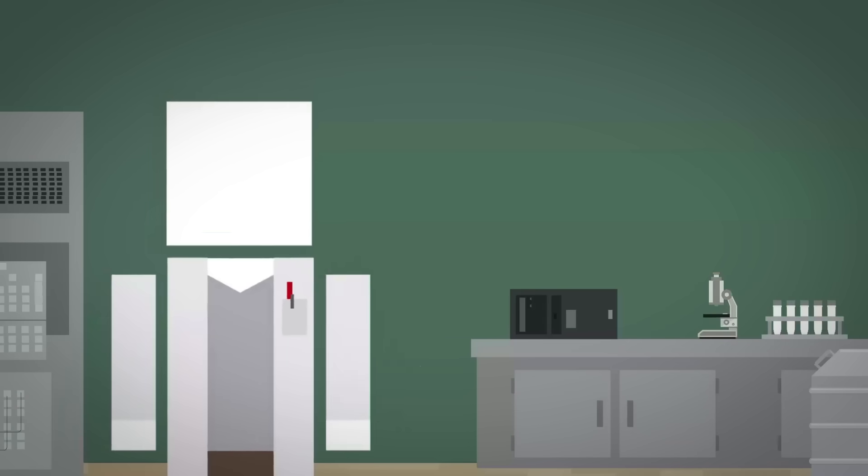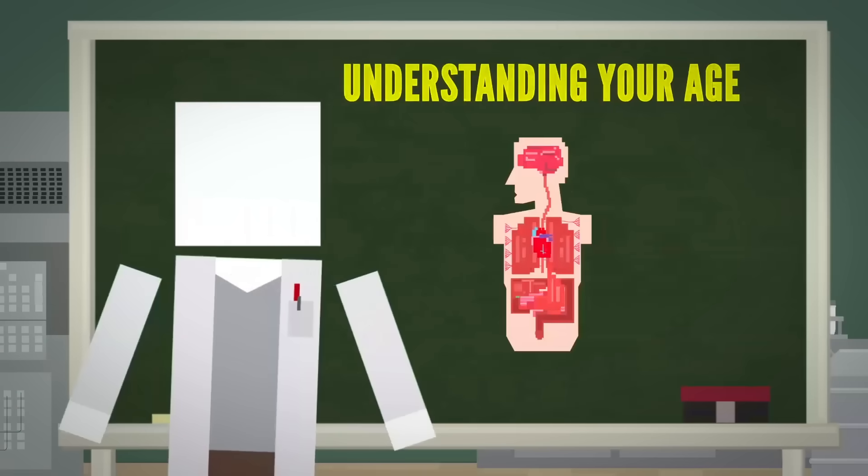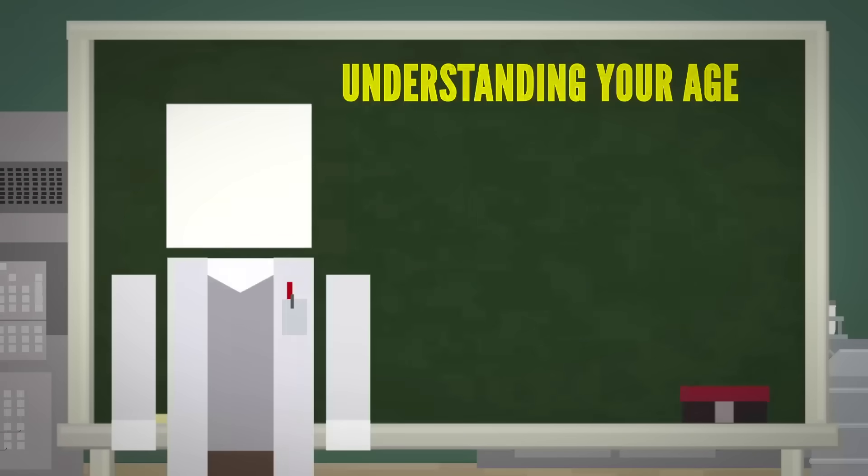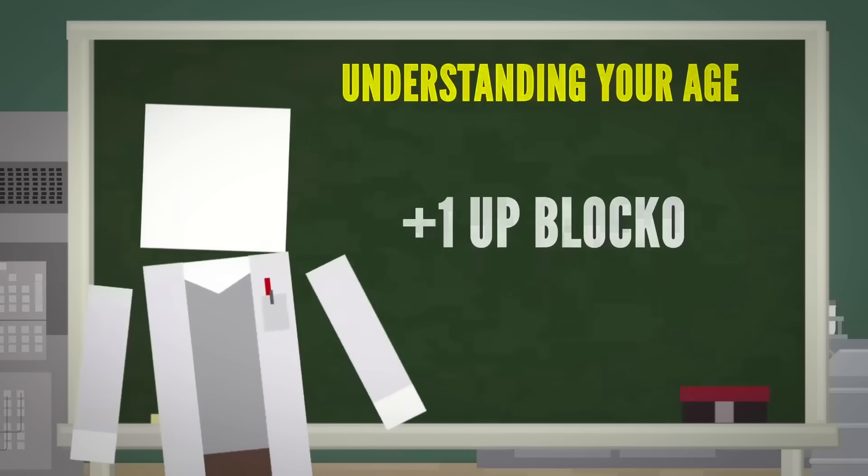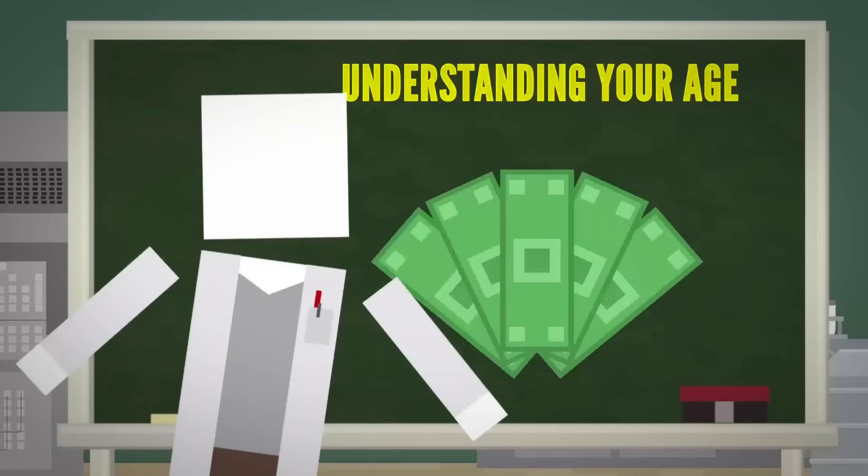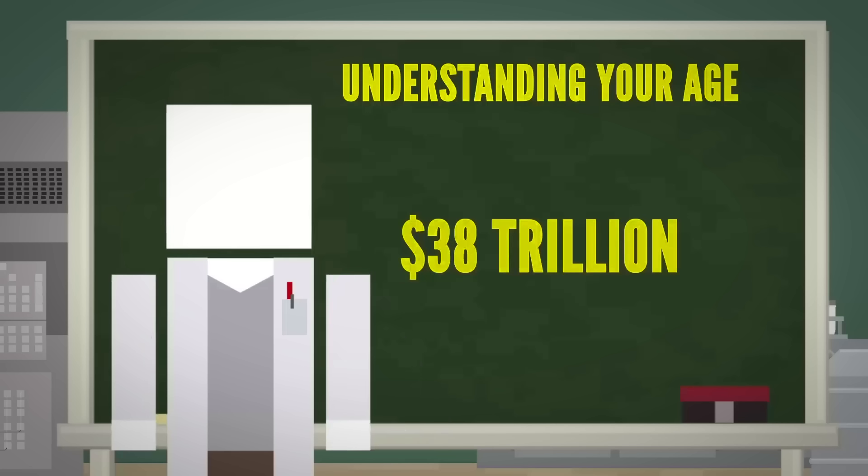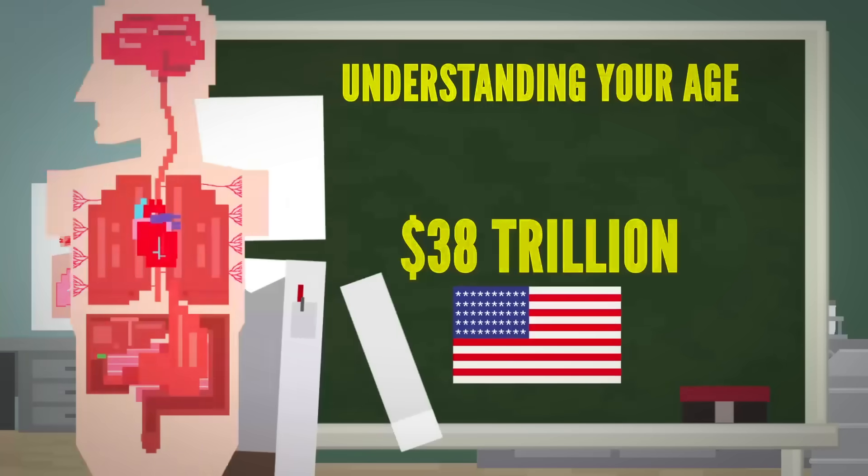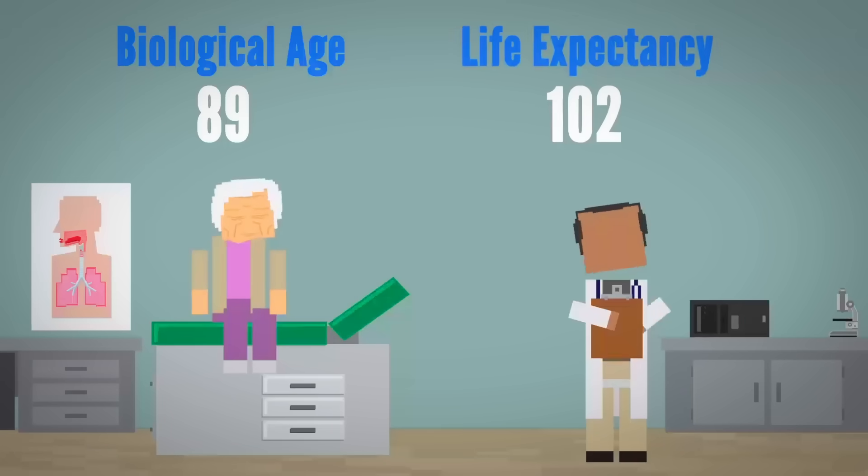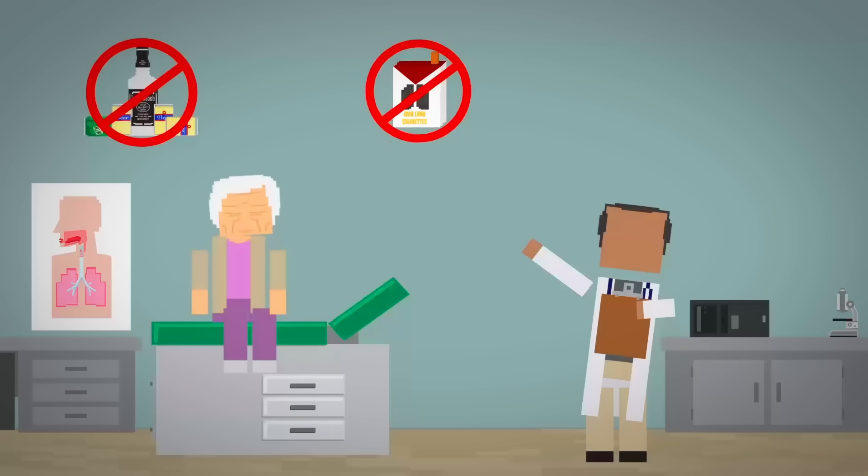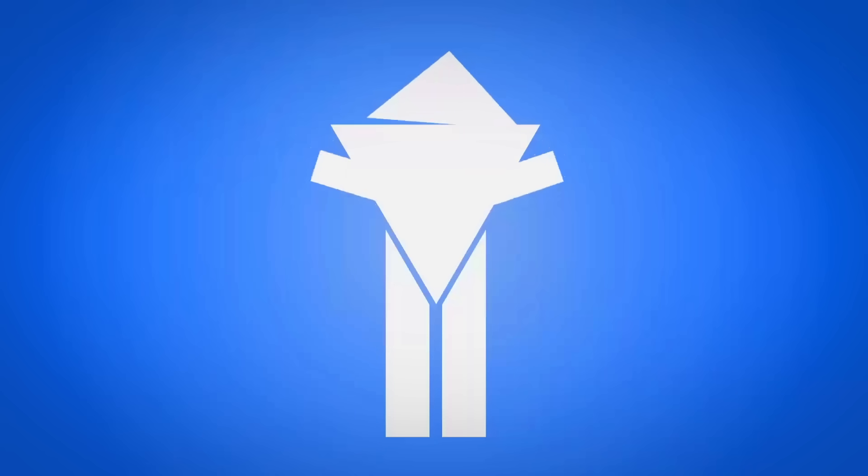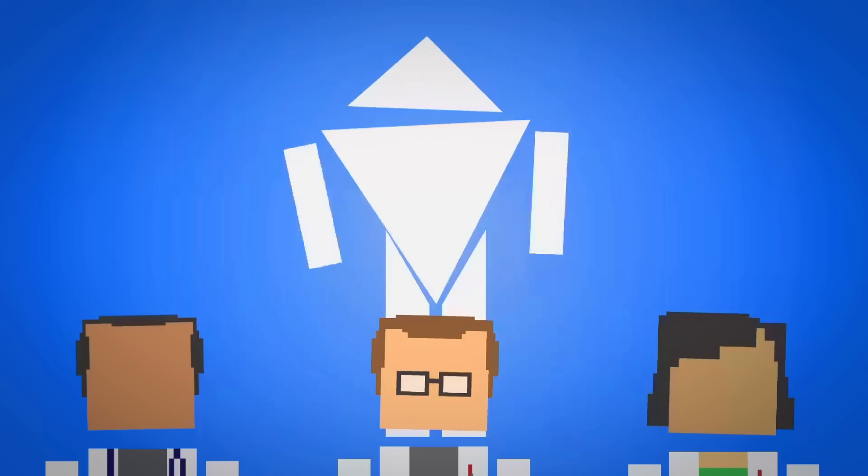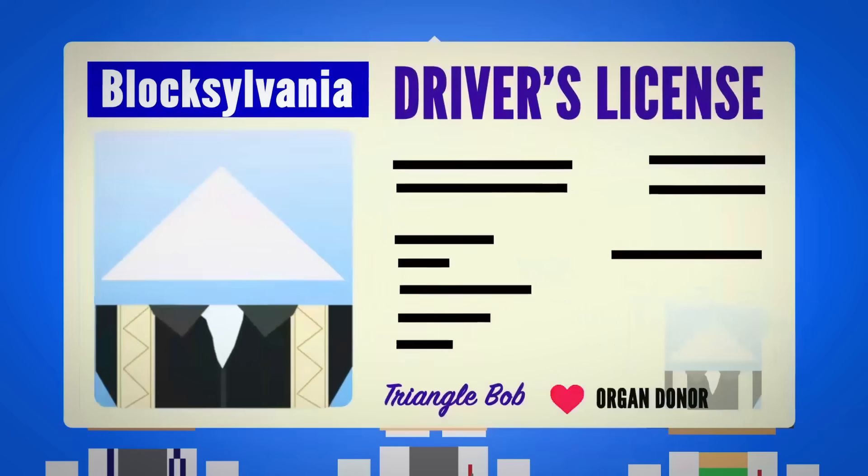So why does this matter? Well, understanding more about your age can help us live longer. That's a pretty good reason to want this technology to thrive. And adding just one year to our lives could save a lot of money, as much as $38 trillion in the US alone. By knowing your biological age and life expectancy, doctors can make recommendations on lifestyle changes or prescribe treatments to improve your health. Perhaps one day it could even be used to help doctors determine whether or not you would be a good candidate for an organ transplant.